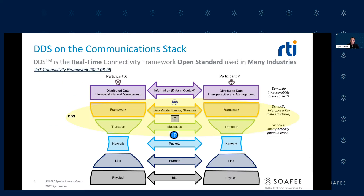Let me start with a high-level picture. Most people know the OSI stack. This is a picture from the Industrial IoT Consortium IIC Connectivity Framework — it's available as a free download. This is essentially a refined version of the OSI stack that shows the different layers of communication between two participants, X and Y. When two software components, two entities, two parties are communicating, what are the different things that need to happen?